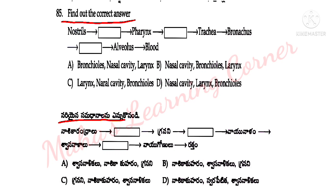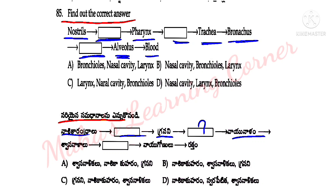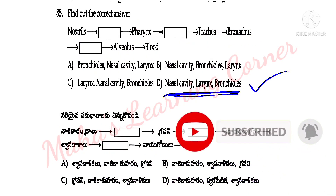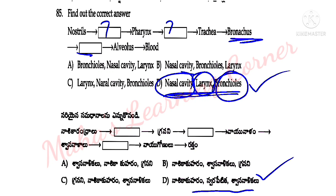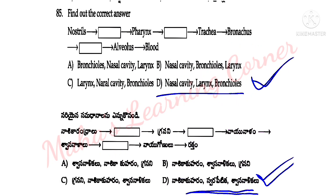Respiration flow chart — find out the correct pairings. Sequence: Nostrils → Nasal cavity → Larynx → Trachea → Bronchus → Bronchioles → Alveolus. Correct answer: option D. Nostrils → nasal cavity, then larynx, then bronchus → bronchioles.